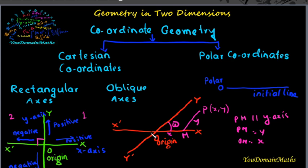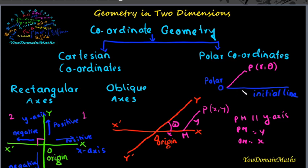Before drawing this, we will discuss polar coordinates. Suppose P be a point (r, theta) on a plane. Then op is the distance between o and P — that means the distance from the pole. In the polar coordinate system there is an initial line and this is the pole. So r is the distance from o to P, and op makes an angle theta with the initial line.